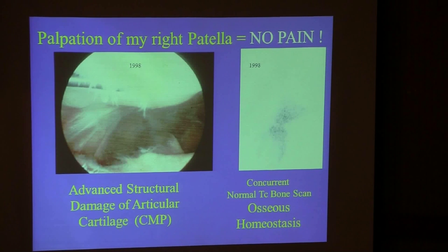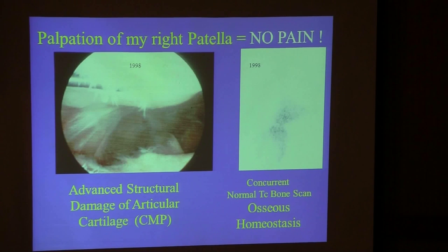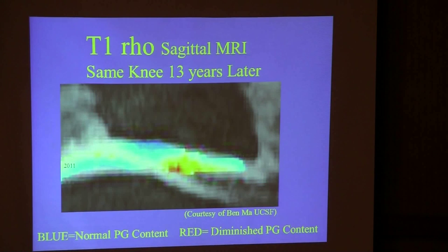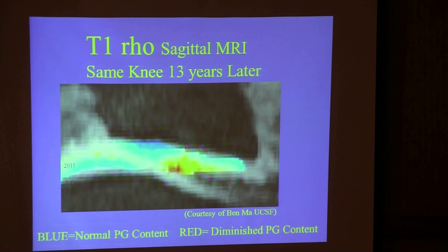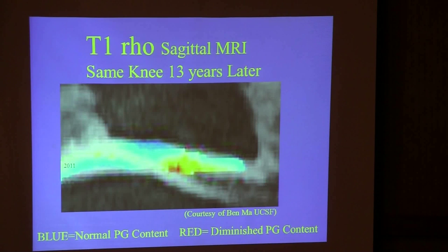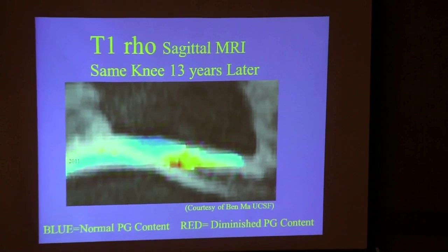Here's an example of advanced chondromalacia damage that has been totally asymptomatic in my knee for 14 years — and I'm not a small person; I'm a pretty heavy-set guy at 65 years old. I also got a T1-rho MRI, which is the hot topic now showing proteoglycan content. My T1-rho is horribly abnormal, but that doesn't mean anything because I have achieved tissue homeostasis in the face of this.